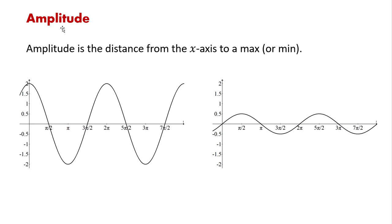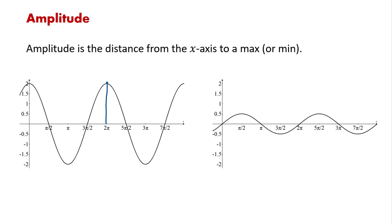Let's start with the amplitude. Amplitude is the distance from the x-axis to a minimum point or a maximum point. I have two examples here. If I pick this maximum point, then the amplitude will be the distance from that point to the horizontal axis. I can use the vertical axis to help me, so I can see that it's going to be two units.